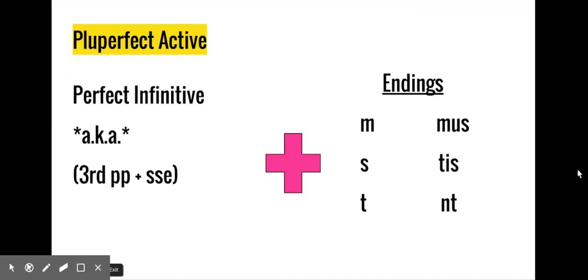The pluperfect active form begins with the perfect infinitive. For those of you who need a little refresher on what the perfect infinitive looks like, you start with the third principal part and you add SSE. After the perfect infinitive, all you have to do is tack on these subjunctive endings, and these subjunctive endings are consistent across the subjunctive mood in the active voice.